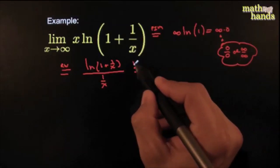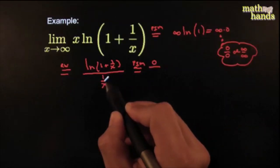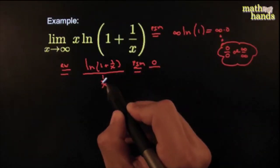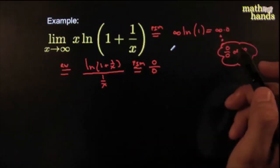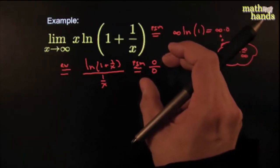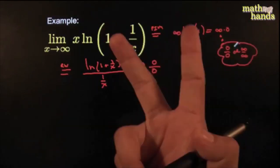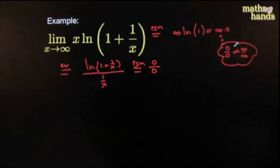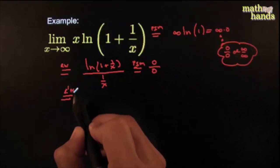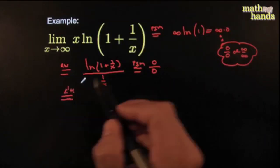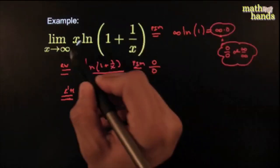So this is just algebra. But now it has an advantage: if I try the plug-in method, I get ln of 1 equals zero on the top, and 1 over infinity — which is also zero — on the bottom. And now we've got ourselves the right form, because every time I've got the right form there's a chance I can use L'Hôpital, so long as when I keep going the limits exist. I've got the right form and all I need is two ingredients: the right form and the limits exist.